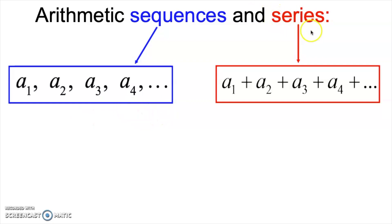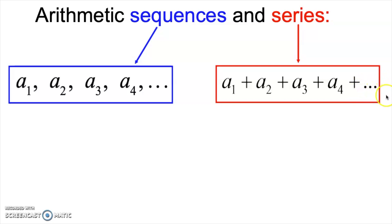A series in mathematics is what we get when we sum up the terms of a sequence. This can be an infinite sum, where we add the first four terms and then the dot dot dot indicates we continue adding all of the terms forever. Or we can have a finite series where we might have a dot dot dot and then a plus a sub 17 as the last term we add. These subscripts — one, two, three, four — indicate the first, second, third, fourth term, etc. in the series. We would read that as a sub one, a sub two, a sub three.